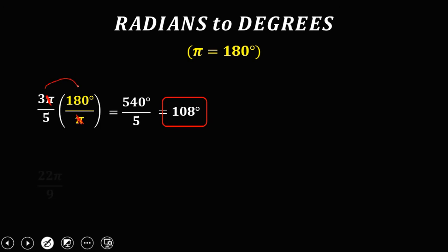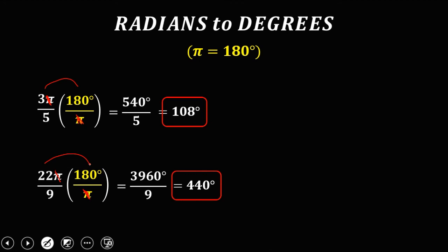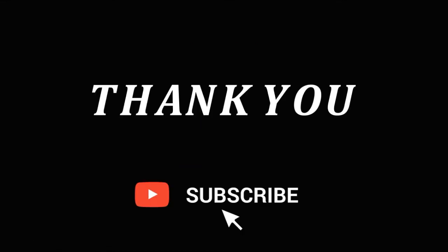For this angle, 22 pi over 9, multiply by 180 degrees over pi. Cancel pi. Then 22 times 180 is 3,960 degrees. Divide by 9 — it's 440 degrees. So this is how to convert radians to degrees. Thank you.